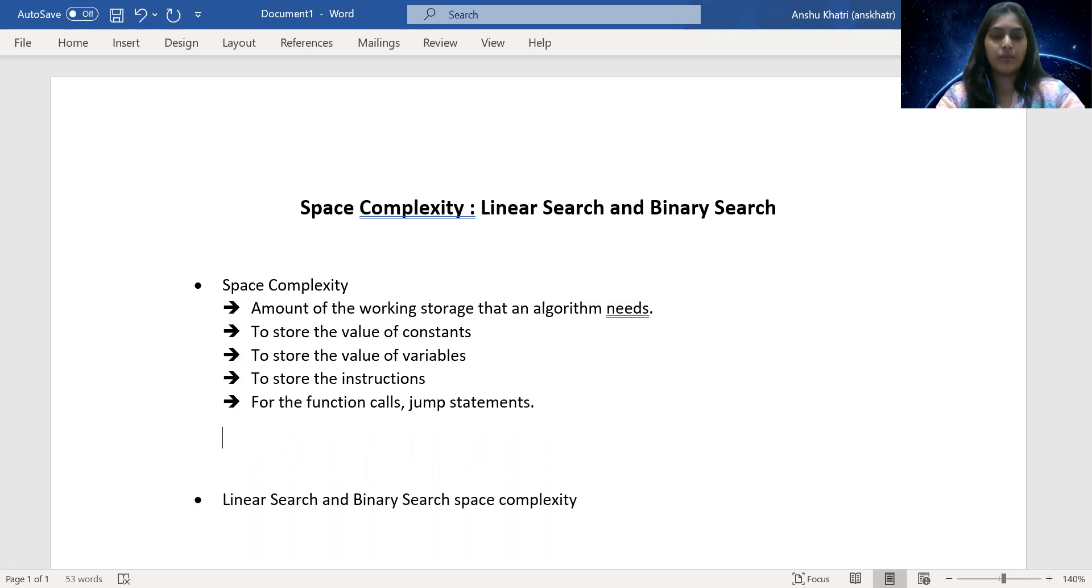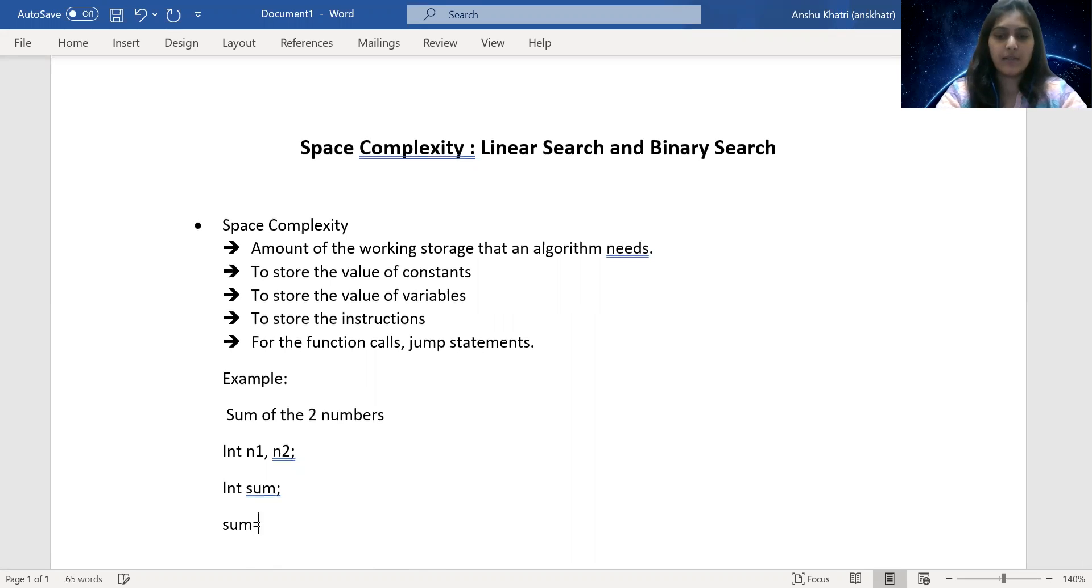So I would like to explain with an example. Now I want to perform the sum of two numbers. So for this, I'm picking two variables int n1 and n2, and one more int sum. Then I'm writing sum equal to n1 plus n2.